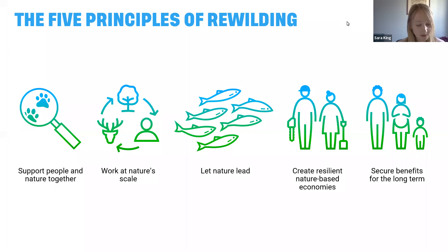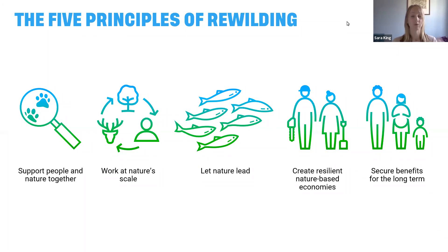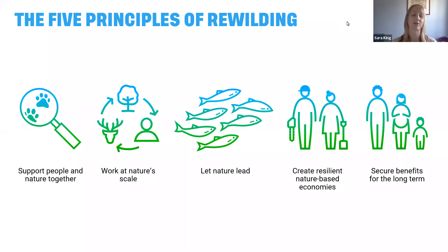At Rewilding Britain we set out a clear set of principles while allowing significant flexibility at the local level for surprising, extraordinary and unpredictable events to emerge. We have five main principles of rewilding. We need scale for nature to truly rewild — we need to be working at the landscape scale to allow natural processes to function. Letting nature lead is another principle — nature can show us a whole range of surprising outcomes, and we need to allow it the space to demonstrate how those natural processes exist within the landscape.